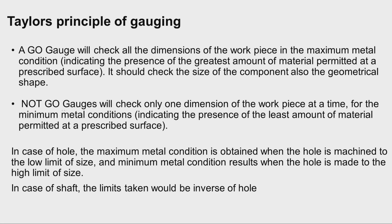Whereas, not go gauges will have to check only one dimension of the workpiece at a time for the minimum metal condition, indicating the presence of the least amount of material permitted at a prescribed surface. In the case of a hole, the maximum metal condition is obtained when the hole is machined to the lower limit of the size, and minimum metal condition results when the hole is made to the high limit. In the case of a shaft, the limits taken would be inverse of the hole.